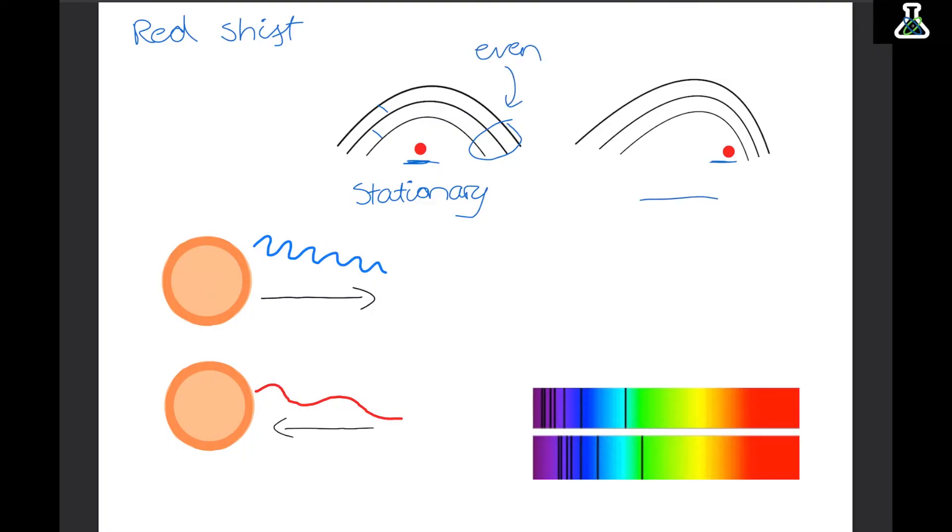Now imagine that the same police car begins moving in this direction as it plays the siren. At the back of the police car the waves are spread out. And at the front the waves are compressed. Now hopefully you remember from the waves topic. That if the waves are really compressed together, they have a higher frequency. And this can often be shown as blue colours. And if things are really spread out, they have a low frequency. So they have a reddish colour.